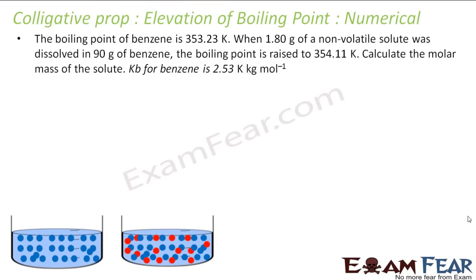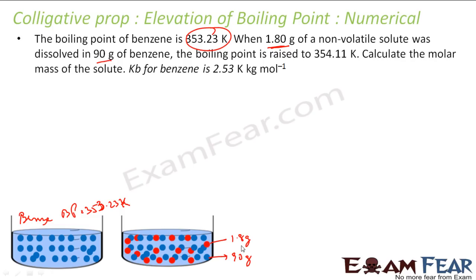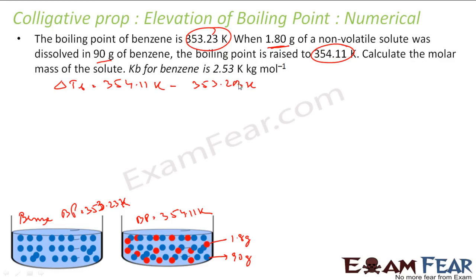The next problem: the boiling point of pure benzene is given as 353.23 K. When 1.8 grams of a non-volatile solute is dissolved in 90 grams of benzene, the boiling point has risen to 354.11 K. So the change in boiling point delta T_b = 354.11 K − 353.23 K = 0.88 K. We need to find the molar mass of the solute; K_b for benzene is given as 2.53 K·kg/mol.